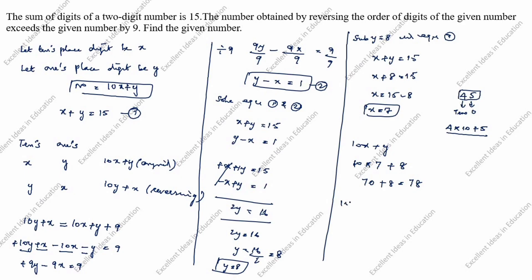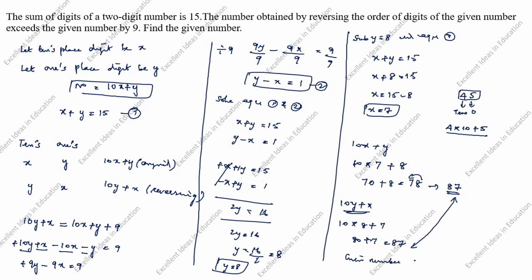Reversing the number gives 10y plus x: 10 into 8 plus 7 equals 80 plus 7 equals 87. The given number is 78, and the reversed number 87 exceeds it by 9 — verified. So the answer is 78. Thanks for watching this video.